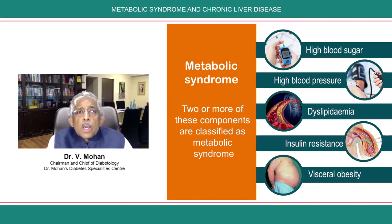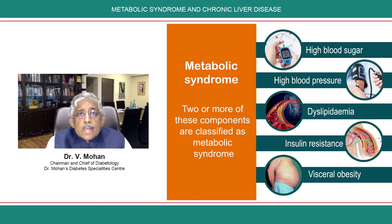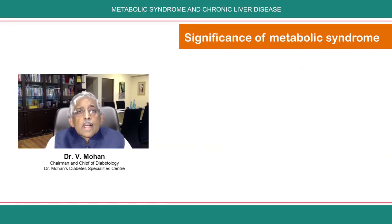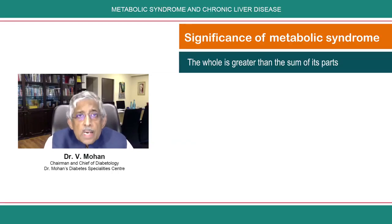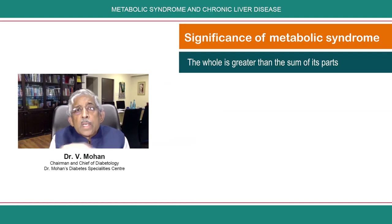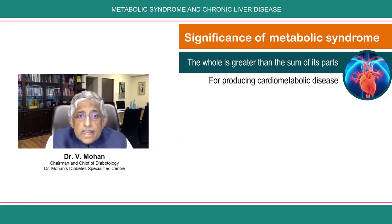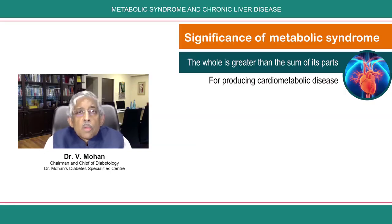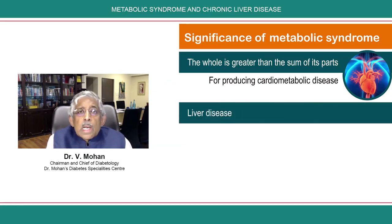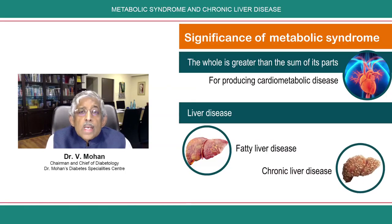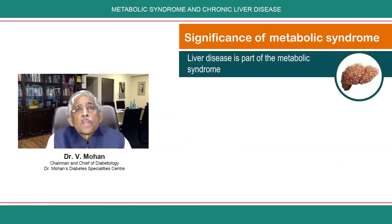It was also called the insulin resistance syndrome, Reaven syndrome, syndrome X, or cardiometabolic syndrome, but the name metabolic syndrome has stayed. Why talk about metabolic syndrome separately from diabetes, hypertension, and so on? As Dr. Reaven said, the whole is greater than the sum of its parts — together, these components produce more cardiometabolic disease than individually. What has now emerged strongly is that liver disease, especially fatty liver disease and chronic liver disease, is probably part of the metabolic syndrome.